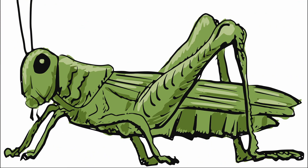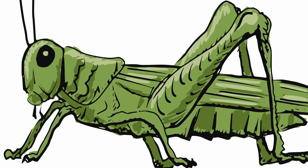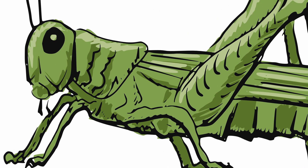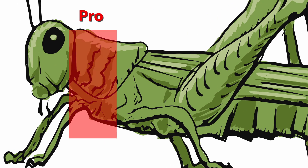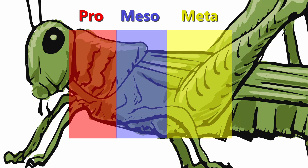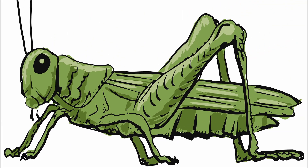Now let's move over to the thorax, which mainly has the task to hold appendages used for movement. The thorax can be divided into three subparts called the prothorax, mesothorax and metathorax. Each of those three subparts holds one pair of legs.